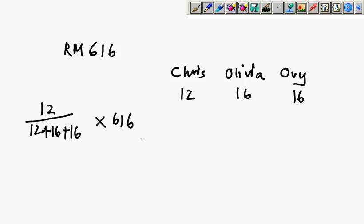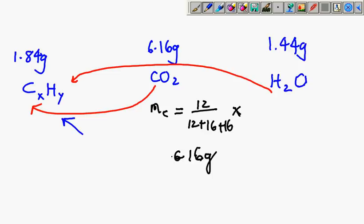Such calculation gives you the mass of the carbon. Now for hydrogen, the mass of hydrogen is (2 × 1) over (2 × 1 + 16) times 1.44. Because of this, I can find that the mass using the calculator.